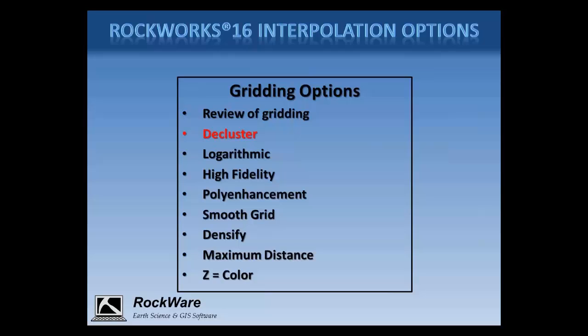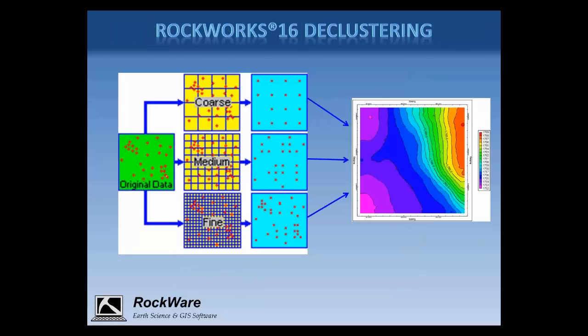The declustering option is at the top of the list in the interface, and it is available for both gridding and 3D modeling. When declustering is enabled, the program overlays the original data with a grid of cells and averages any points that fall into the same grid cell, then uses those averaged points to interpolate the grid. The points in the green box on the left represent the original data, perhaps pulled from irregularly distributed boreholes or wells. The columns labeled coarse, medium, and fine represent various declustering grids, and the user can adjust the density of the grid to determine how many points remain after declustering.